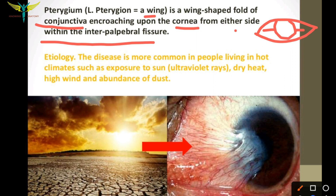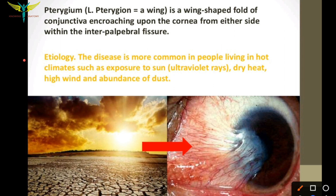The etiology: this disease is more common in people who live in hot climates, such as exposure to sun — that means ultraviolet rays — dry heat, high wind, and abundance of dust. So this is the etiology.